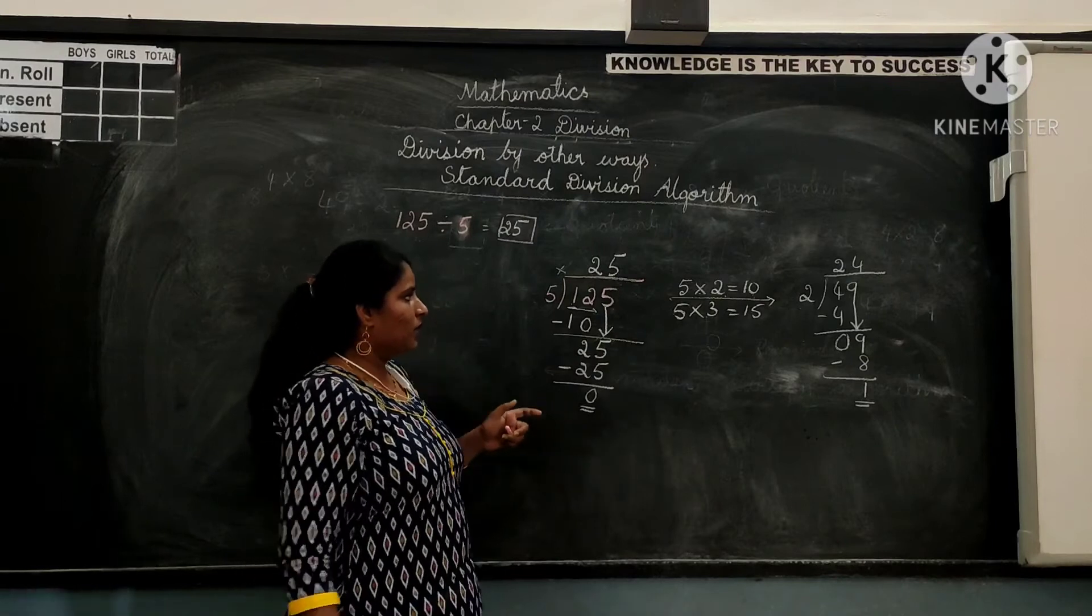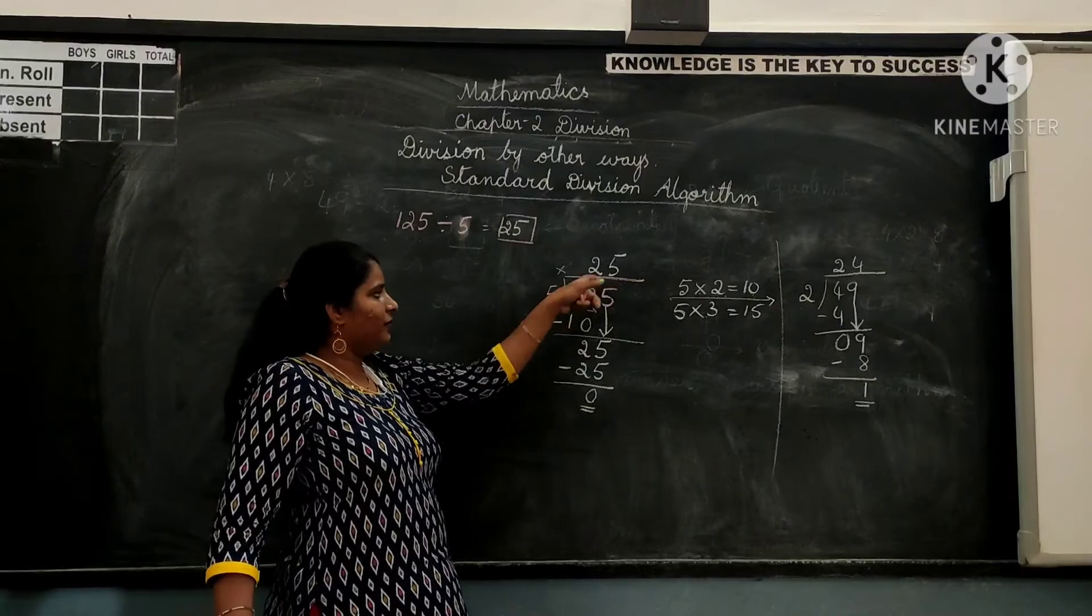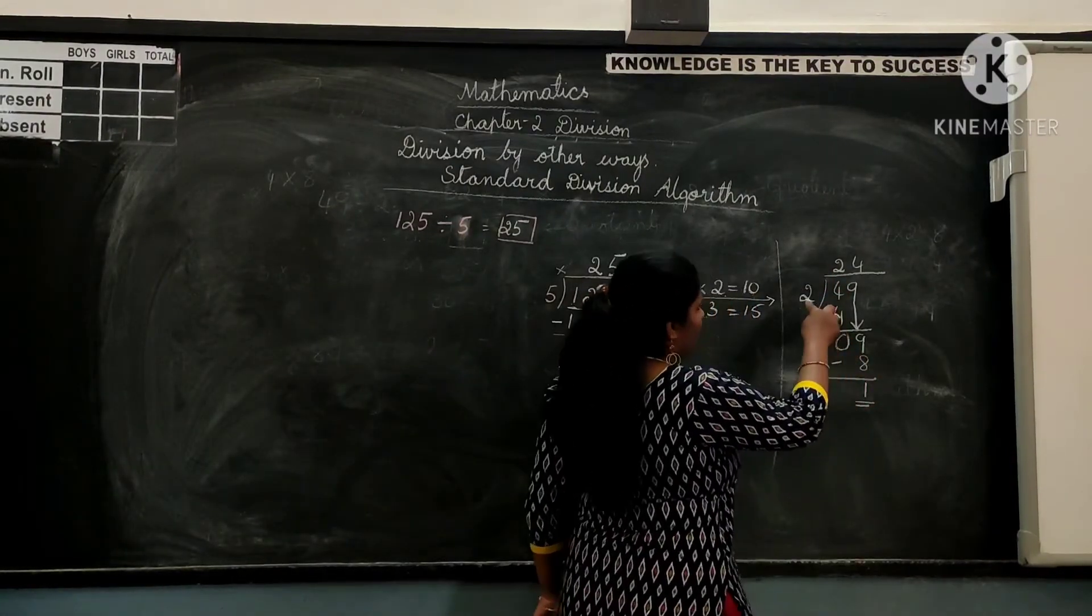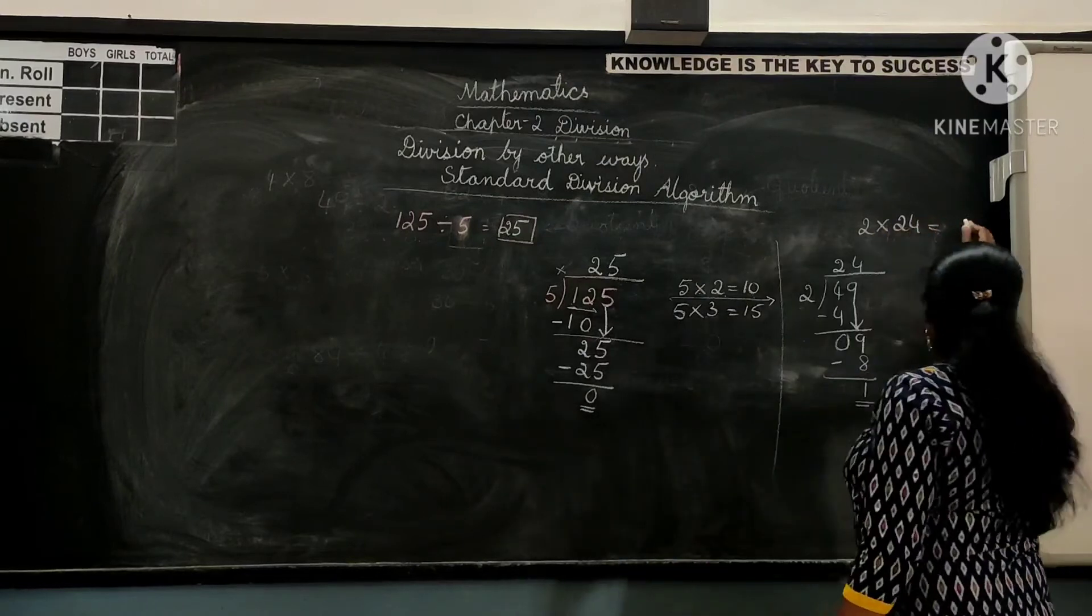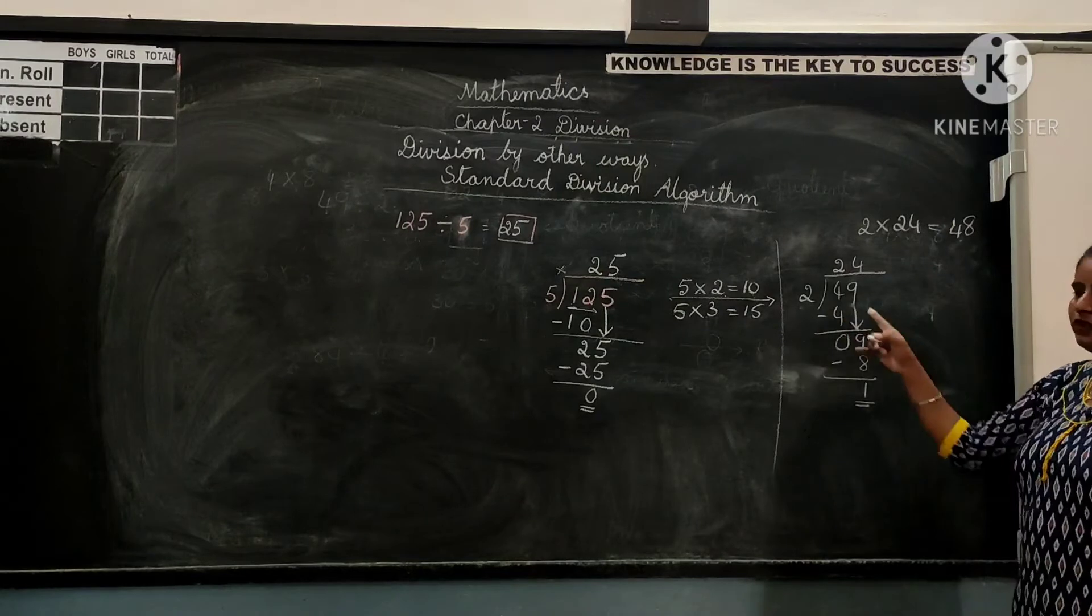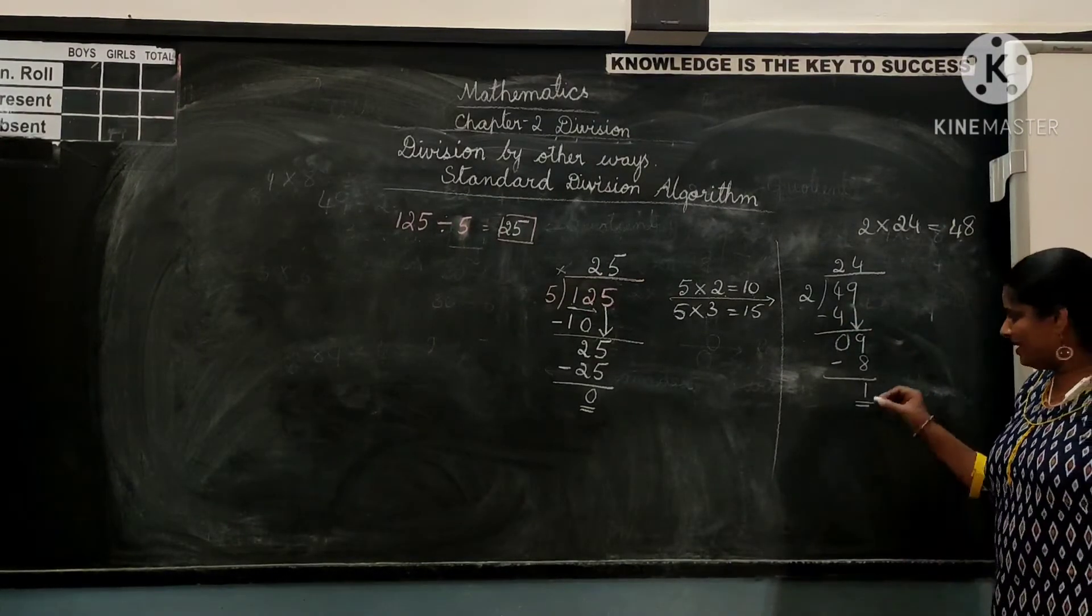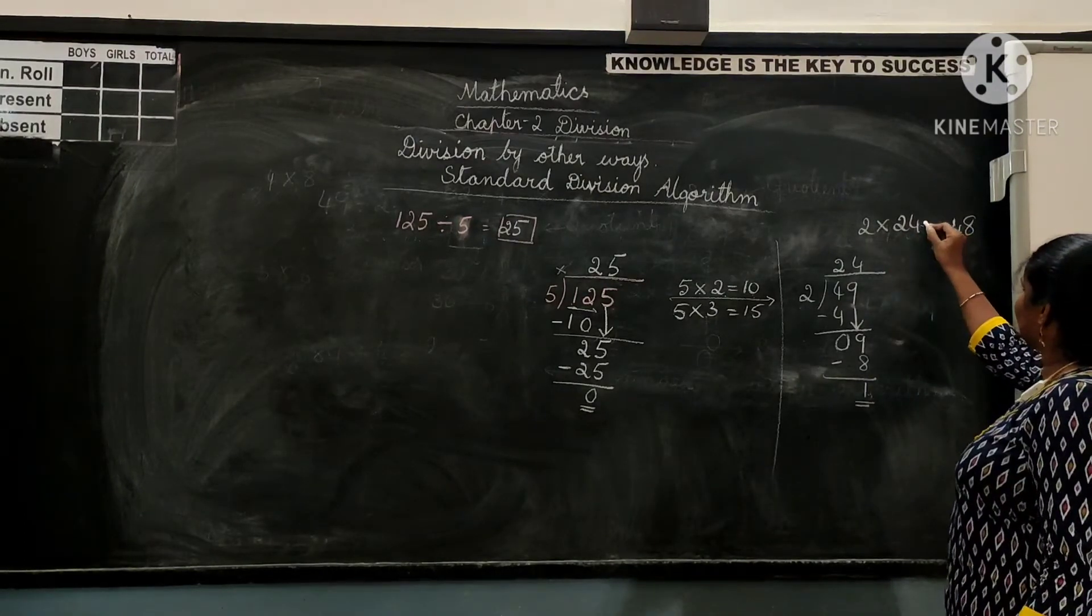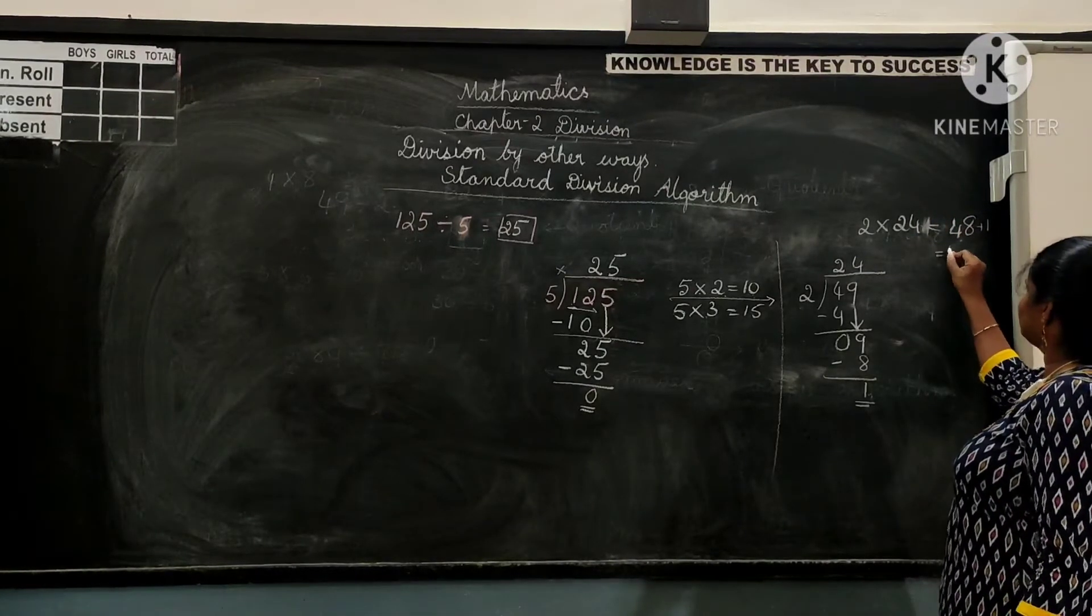So when we cross-check, here, 25, 5 into 25 gives you about 125. Now what about 2 into 24? 2 into 24 gives you, if you want, you can write and solve the problem. 2 fours are 8, 2 twos are 4. We have 48, but here the dividend was 49. Where did 1 go? 1 is down here as the remainder. So 2 into 24 and again you add 1. That gives you 49, 48 plus 1 which is 49.